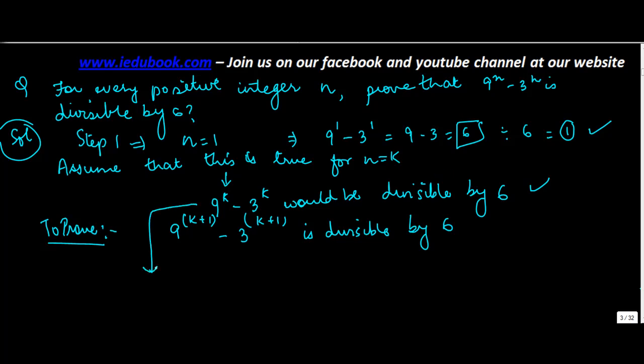To do this, let us first assume that 9^k minus 3^k equals 6d. Why 6d and what is d? d means the difference. If 9^k minus 3^k is divisible by 6, then there has to be some number d which when multiplied by 6 gives this result. d could be anything - 1, 2, 3 - giving you 6, 12, 18. All these numbers are divisible by 6.